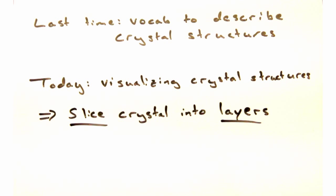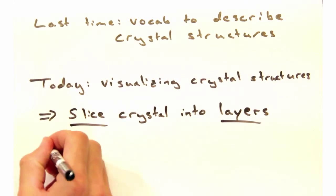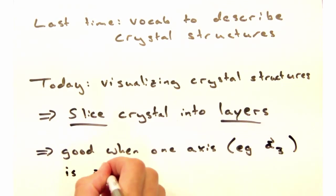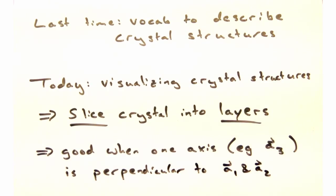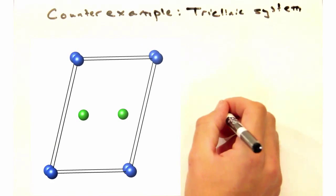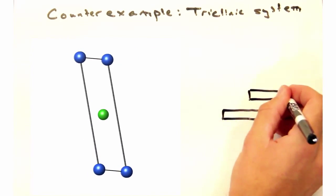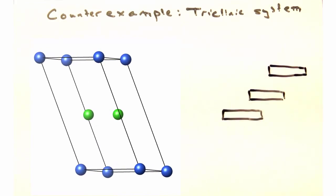And can we use this technique to visualize any crystal? Almost, as long as it has one axis perpendicular to the other two, typically the A3 axis. This technique isn't useful for triclinic systems because then these slices would be offset from each other.